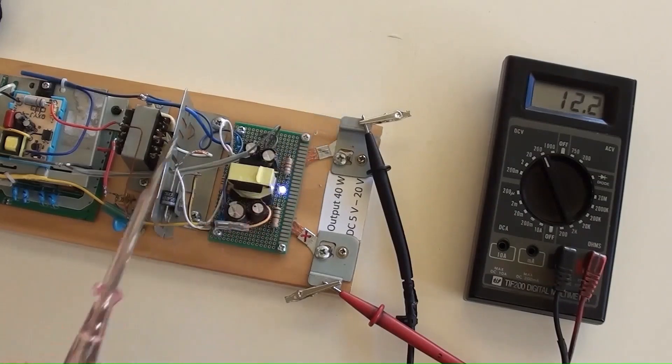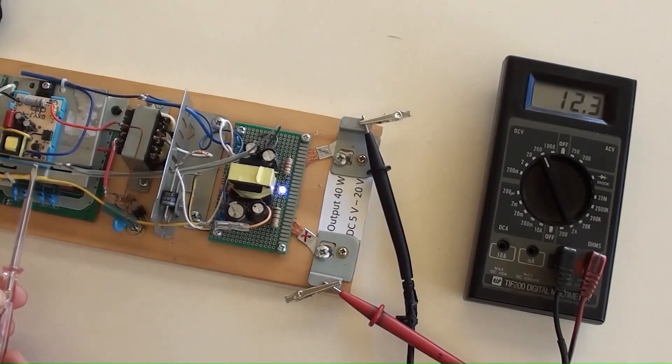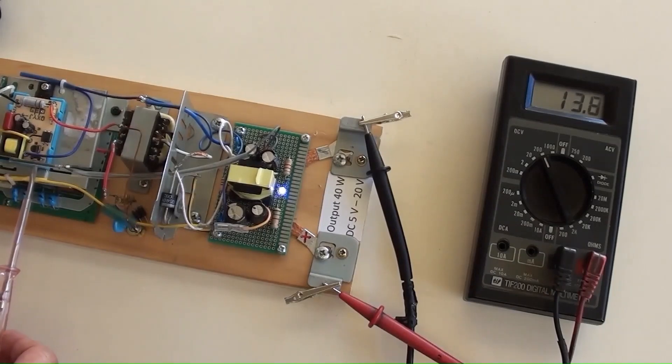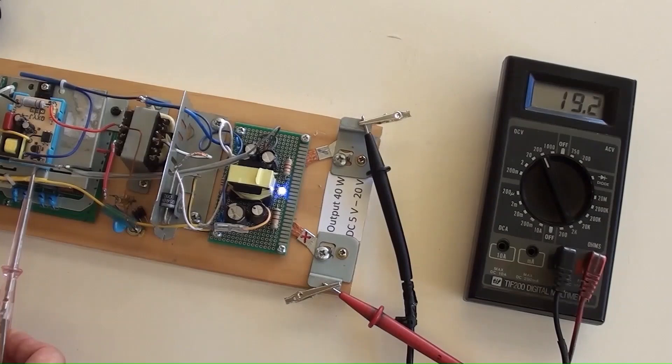By using this screwdriver to adjust the output voltage, turning clockwise will increase the output voltage and watching out the multimeter's reading. The output voltage is going to reach 20 volt now and stop there.